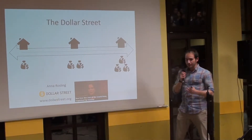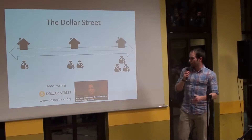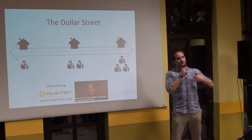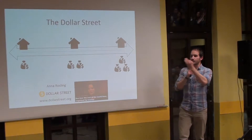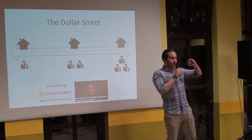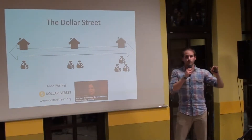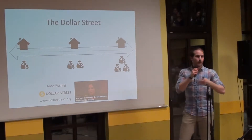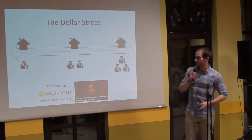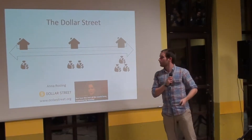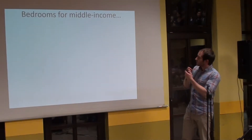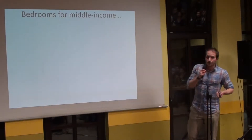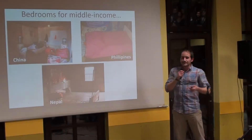We have this woman here who did a very good project — Anna Rosling — about the dollar street. You can check it out. She tried to visualize exactly this street. She would send out people all over the world and they would take pictures of items: of the house, of the stove, of anything from the people in the house. So let's take a look at the bedrooms for the middle-income people.